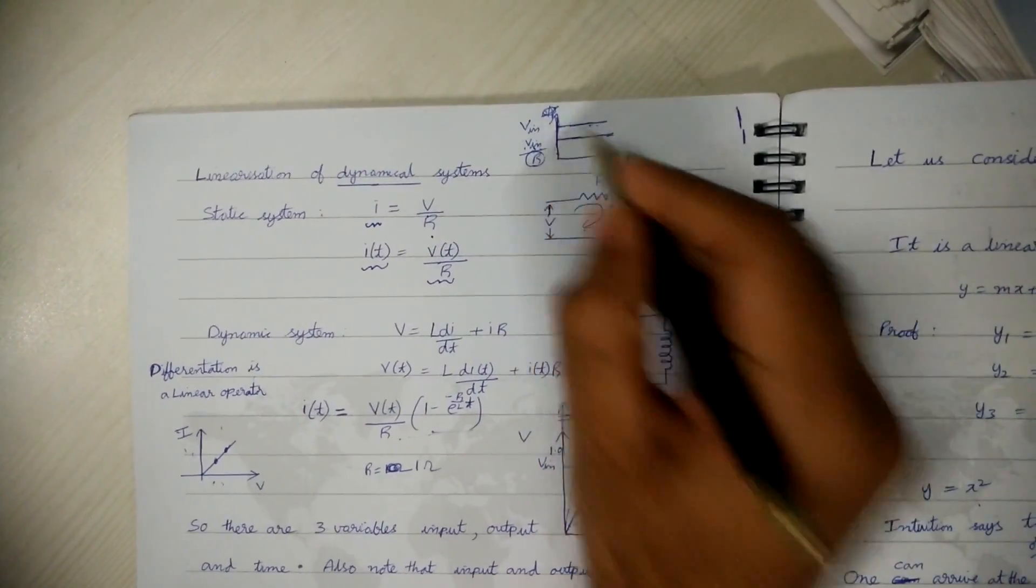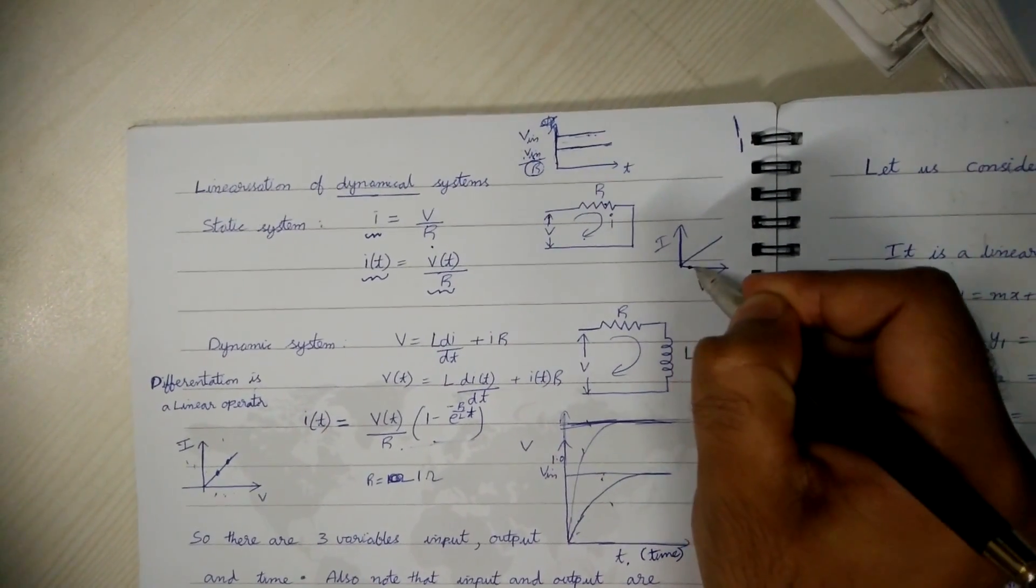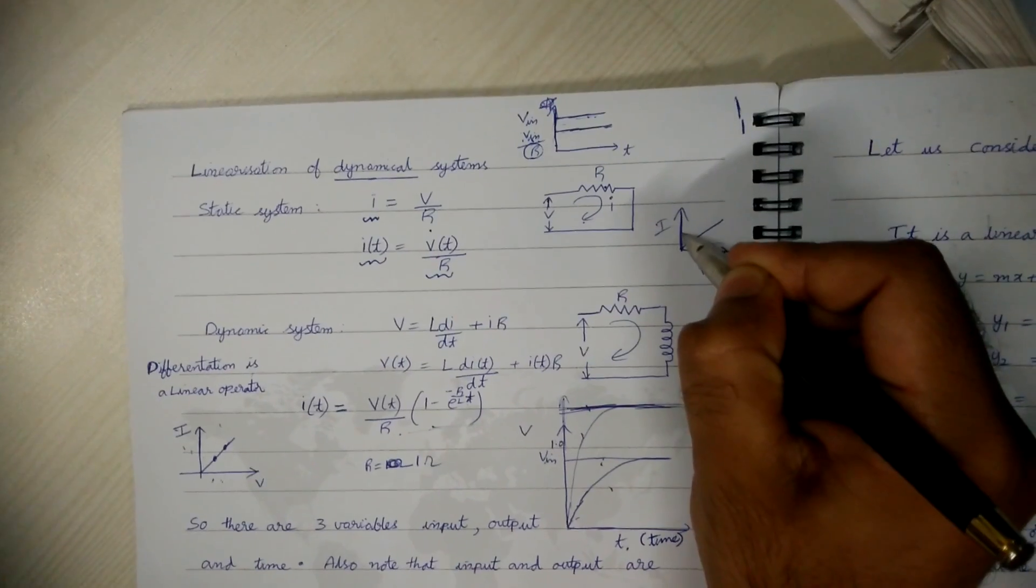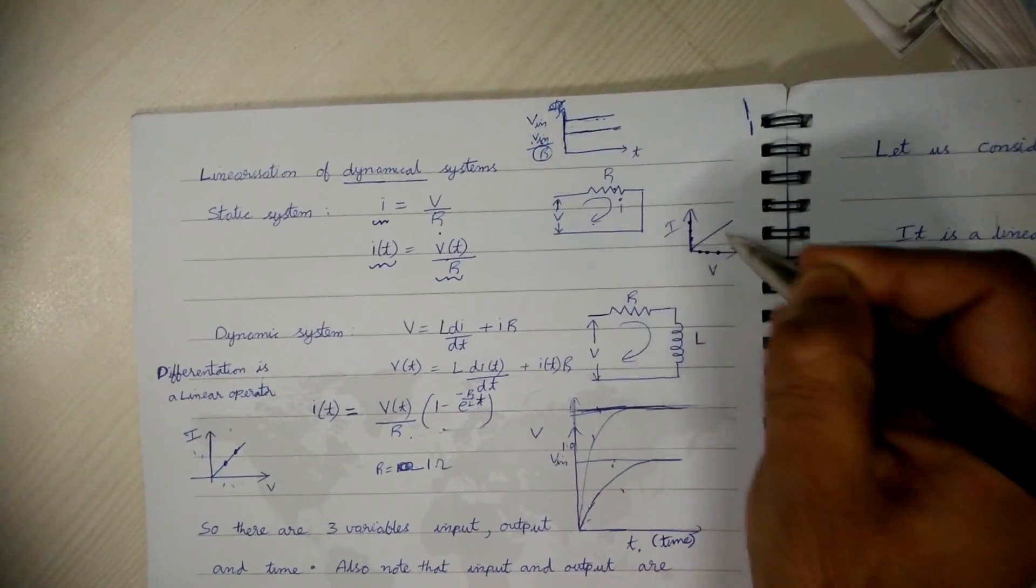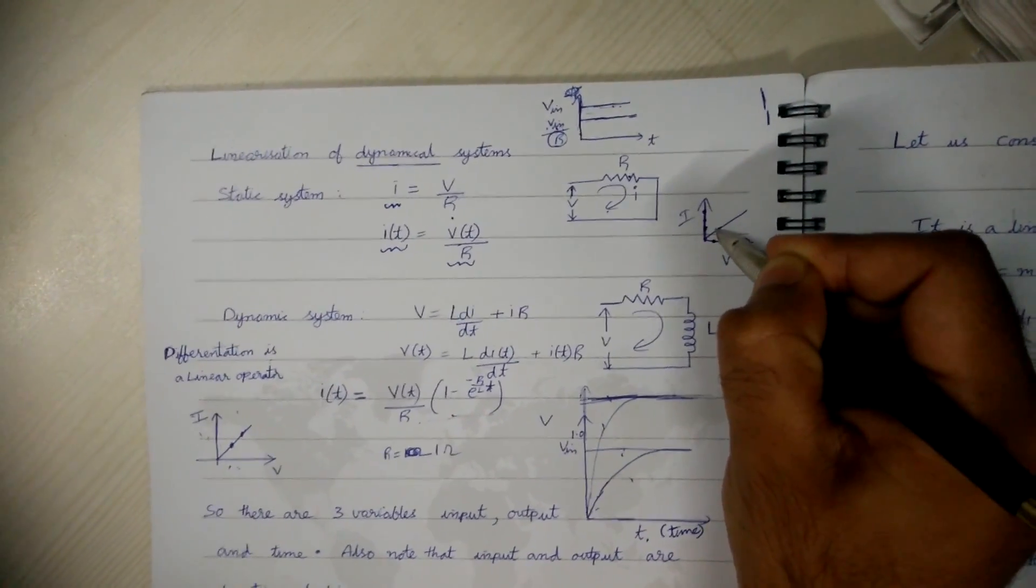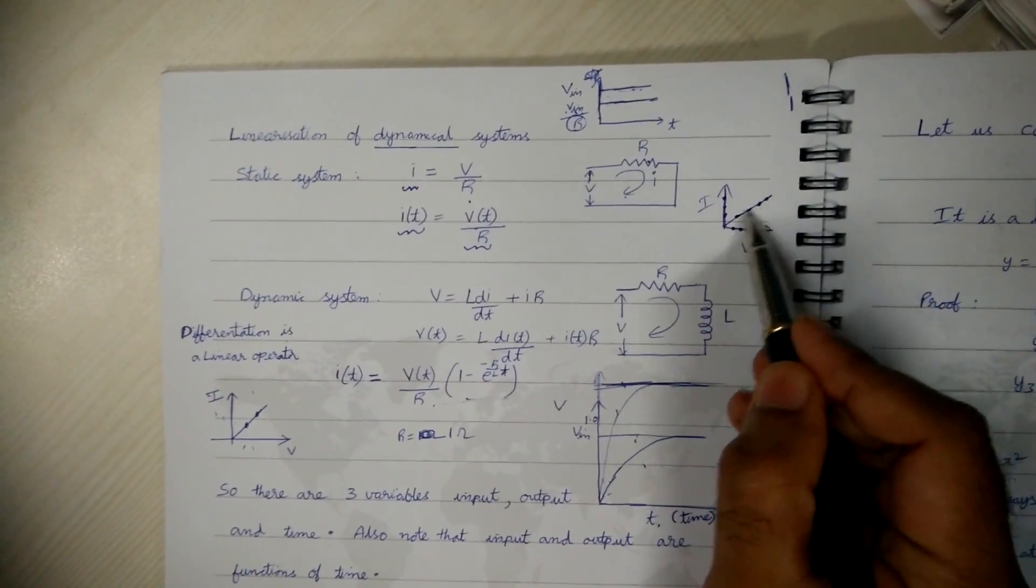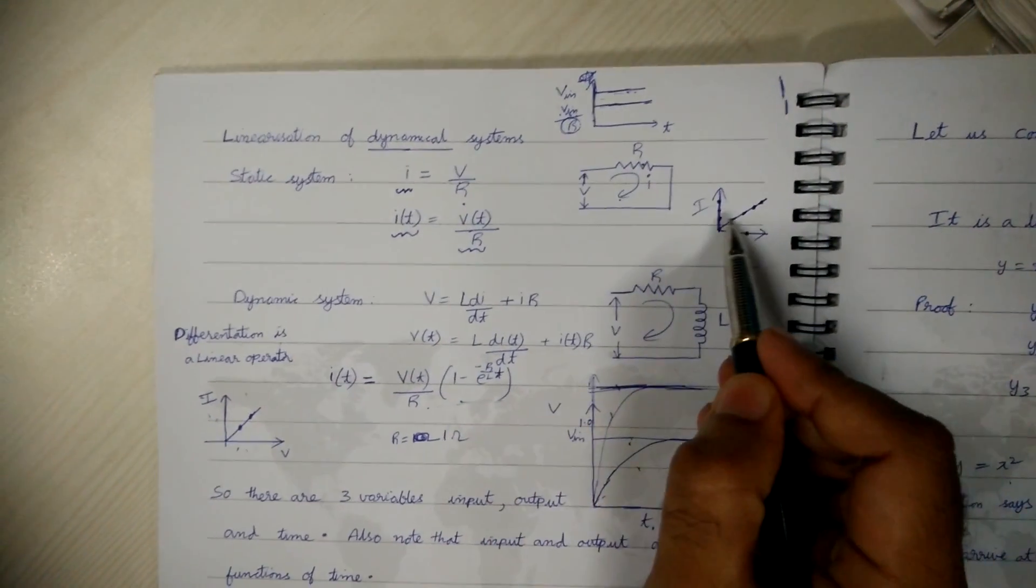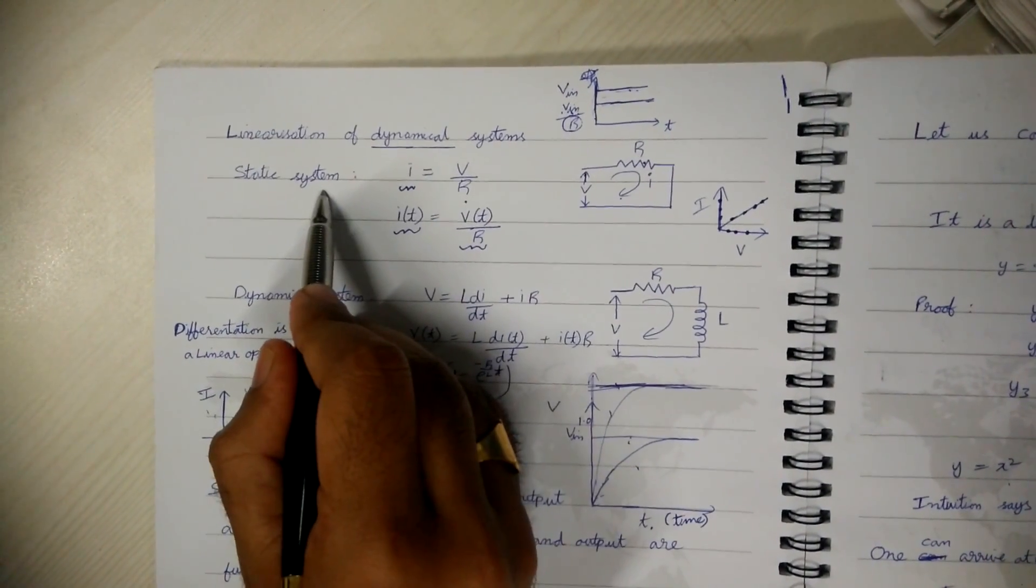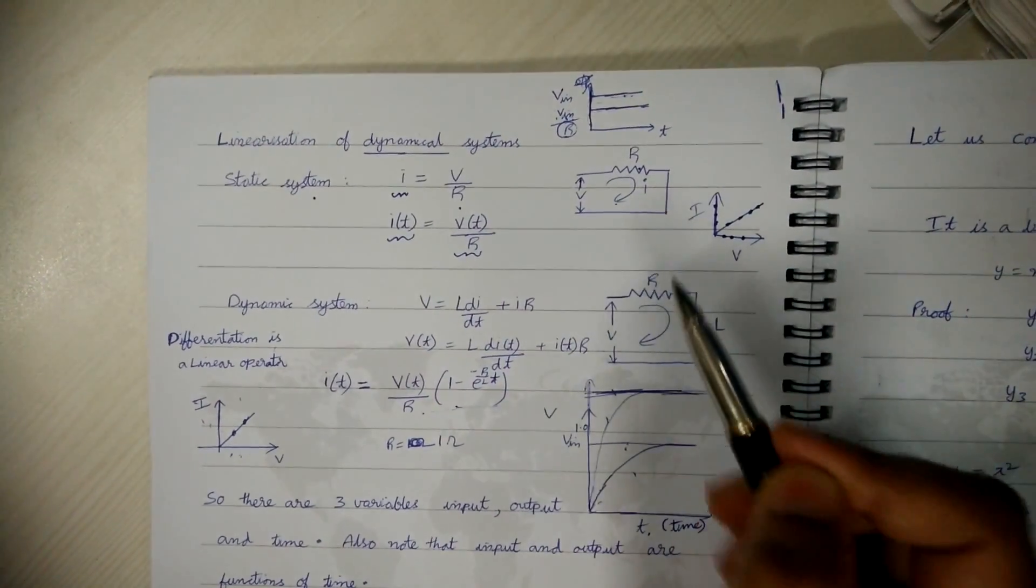So if we apply different values of V in we will get different values of I. So if you plot them they fall in a straight line. So this system is a linear system but a static system because it doesn't have any dynamics.